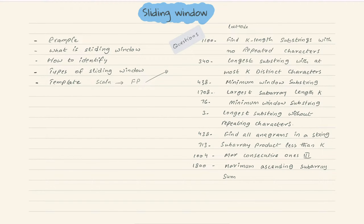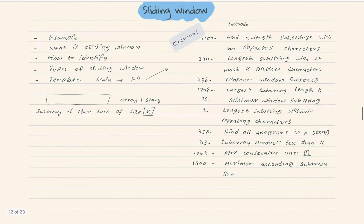Let's start with some examples of how these questions come. They will give us some array or some string, and ask something like: find a subarray of maximum sum of size k. Let's take an example array and find the subarray of maximum sum of size k equal to 4.